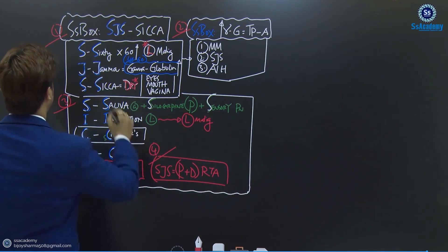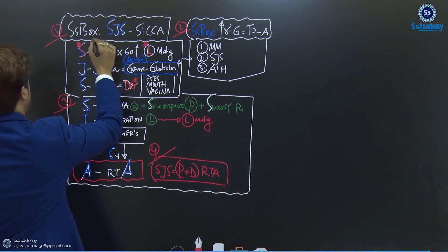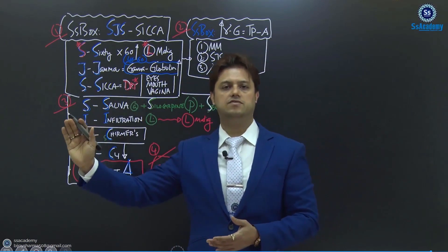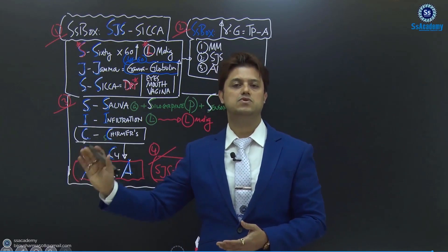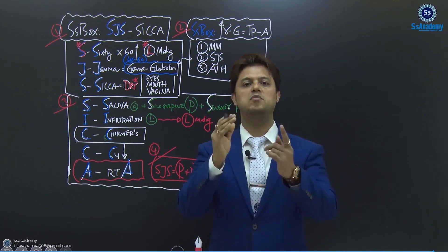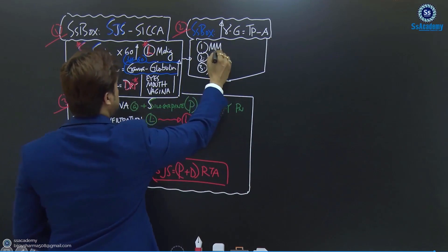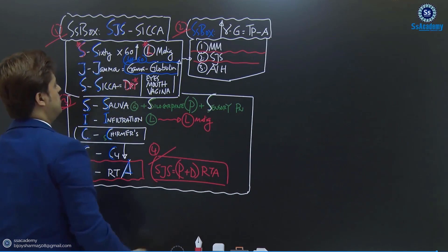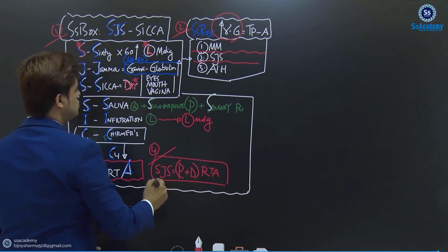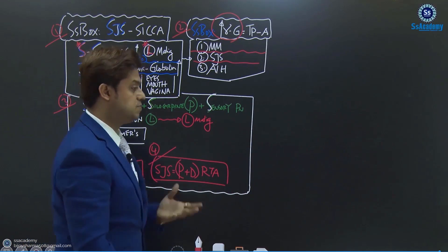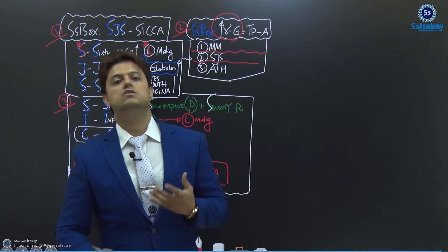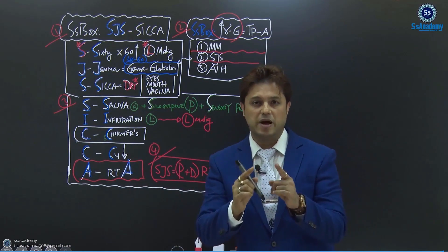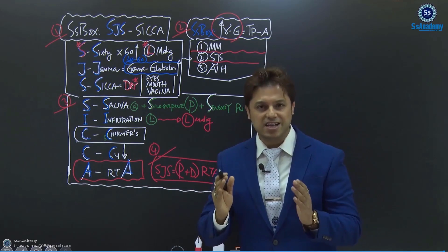The most important things to remember: S for 60, Zama, Sika. And Sika for saliva, infiltration, C4, Schirmer's, and A for acidosis. Also remember that multiple myeloma, Sjogren's syndrome, and AIH are causes of hypergammaglobulinemia. And Sjogren's syndrome is the cause of both proximal and distal renal tubular acidosis. These are the important boxes. Thank you very much.